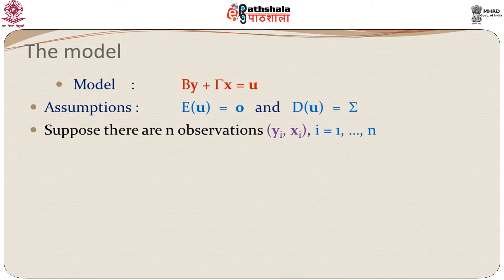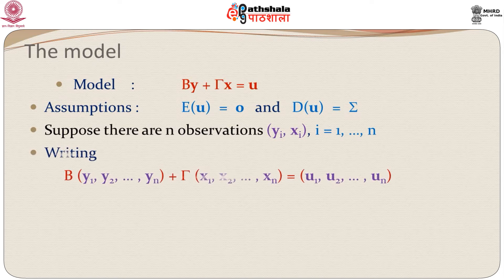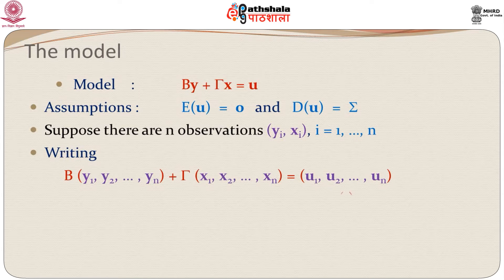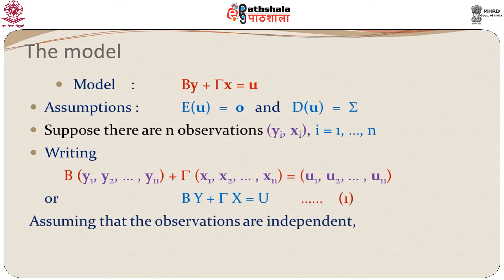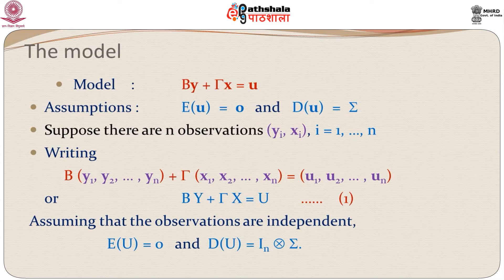Taking the endogenous and exogenous variables for each of the n observations, we have G plus K elements for each observation. Writing all n observations together in matrix notation, we have BY plus Gamma X equal to U. Assuming n observations are independent, expectation of u is 0, and the dispersion assuming independence would be I_n Kronecker product Sigma.